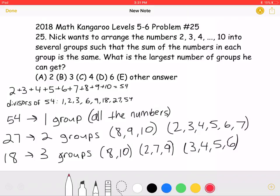The sum of these numbers is 54. The sum of the numbers in each group must be a divisor of 54. The divisors of 54 are 1, 2, 3, 6, 9, 18, 27, and 54.